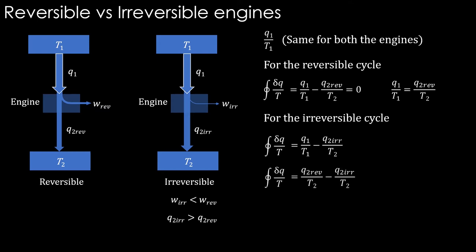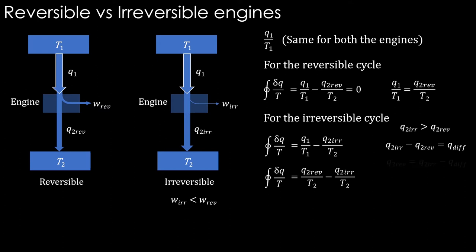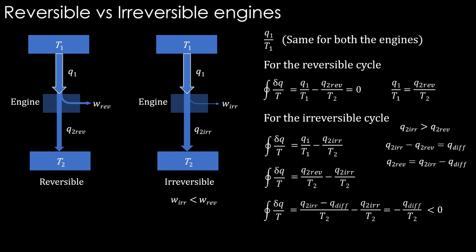Substituting that result, and using the fact that q2 irreversible is greater than q2 reversible, the difference between them gives a positive quantity — call it q_difference. Rearranging gives an expression for q2 reversible. Substituting into the cyclic integral, the q2 irreversible/T2 terms cancel and what remains is minus q_difference divided by T2, which is not equal to zero.